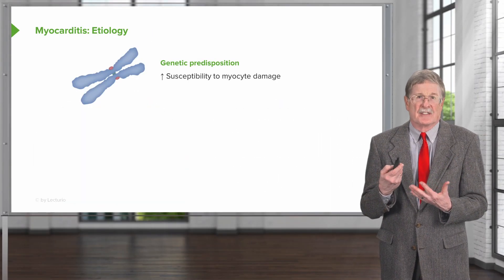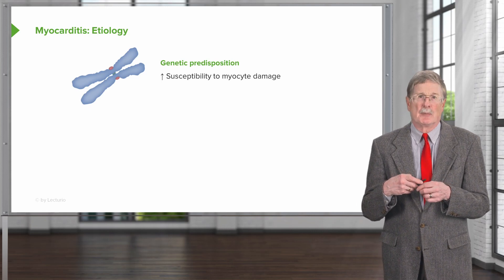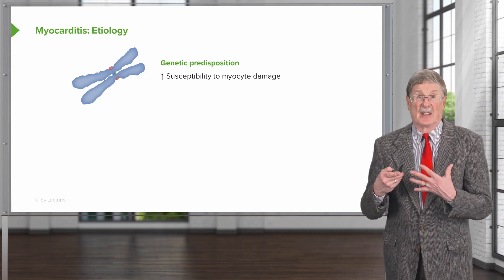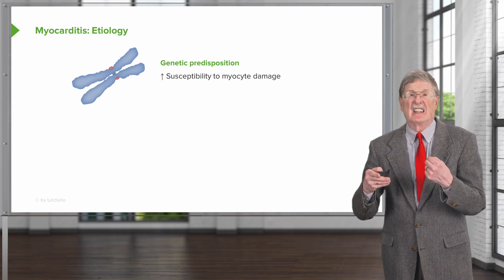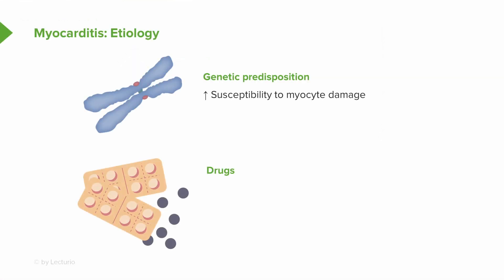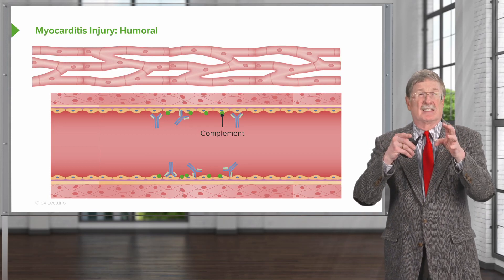What are the underlying etiologies? There is a genetic predisposition — increased susceptibility to myocyte damage, or genetic polymorphisms in immune function that predispose an individual to cardiac inflammation. There are also drugs we know about that can cause ongoing myocardial injury: doxorubicin, used in many chemotherapeutic regimens; cyclophosphamide in the same general category; cocaine; and other drugs. In terms of general mechanisms, there are two to three main flavors.